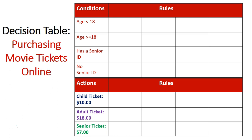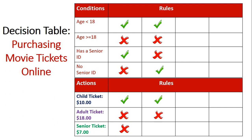Let's look at the first column. In the first column, the age is under 18, so being that they are under 18, they are a child. We'll look at the second column as well — even if they do or don't have a senior ID, it doesn't matter. If they're under 18, regardless, they're going to get a child ticket. It's in the last two columns where the senior ID really matters.